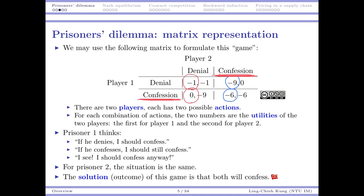Before we move to the next slide, look at this matrix again. This is actually the worst outcome for them, because together they will be put in jail for 12 months. If, for example, they could coordinate and both say denial, they would only be in jail for two months total — that's definitely better, and we say that system is more efficient because the people involved become happier. So they are doing something inefficient — and that's not because they are not smart. Actually they are smart; they have calculated and found what's optimal for them.